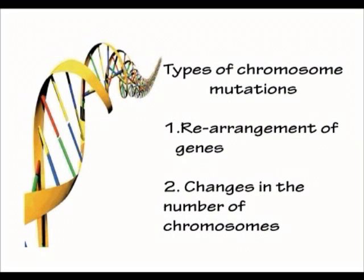Chromosomes can mutate in two main ways. First, there can be a rearrangement of the genes, where the chromosome actually splits up and parts of it move around. Or we could end up with a different actual number of chromosomes in a cell.